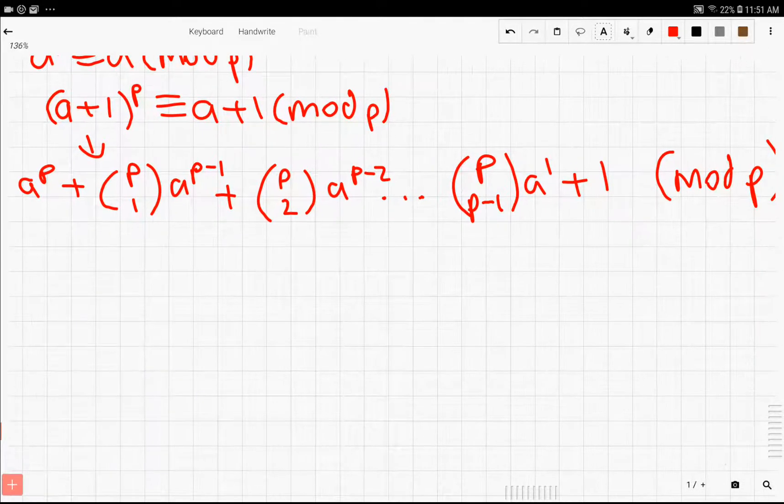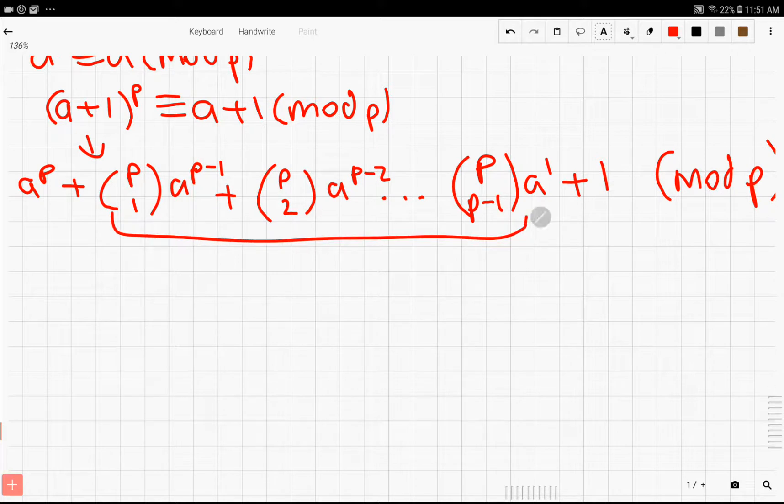We're going to simplify this expression by turning all of these middle terms to 0. The reason we can do this is because each and every one of these is a multiple of p. Therefore, it simplifies to just 0, 0, and 0. If you didn't know, any (p choose i) where p is prime is a multiple of p. That's also a pretty useful thing to know, though not as useful as the theorems we're going over right now.